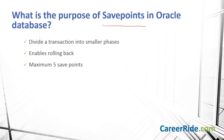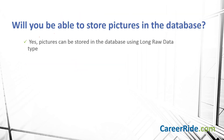What is the purpose of save points in Oracle database? Save points are used to divide a transaction into smaller phases. It enables rolling back part of a transaction. A maximum of 5 save points are allowed in Oracle database. Will you be able to store pictures in the database? Yes, pictures can be stored in a database using the LONG RAW data type. This data type is used to store binary data up to 2 gigabytes in length. However, a table can have only one LONG RAW data type column.